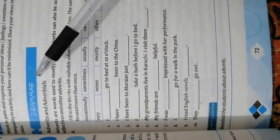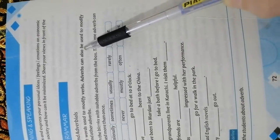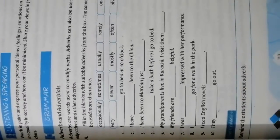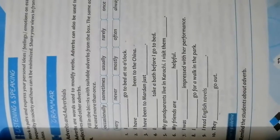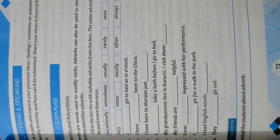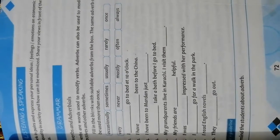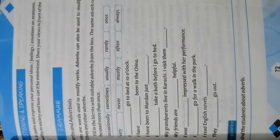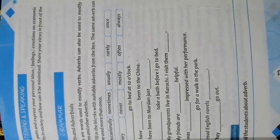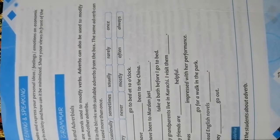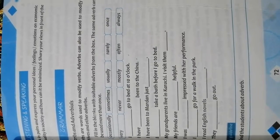What are adverbs? Adverbs are words used to modify verbs. Adverbs can also be used to modify adjectives and other adverbs. An adverb is a word that modifies a verb — for example, 'he sings loudly' — an adjective, for example 'very tall', another adverb, for example 'ended too quickly', or even a whole sentence, for example 'fortunately I had brought an umbrella.' Adverbs often end in -ly, but some, such as 'fast', look exactly the same as their adjective counterparts.